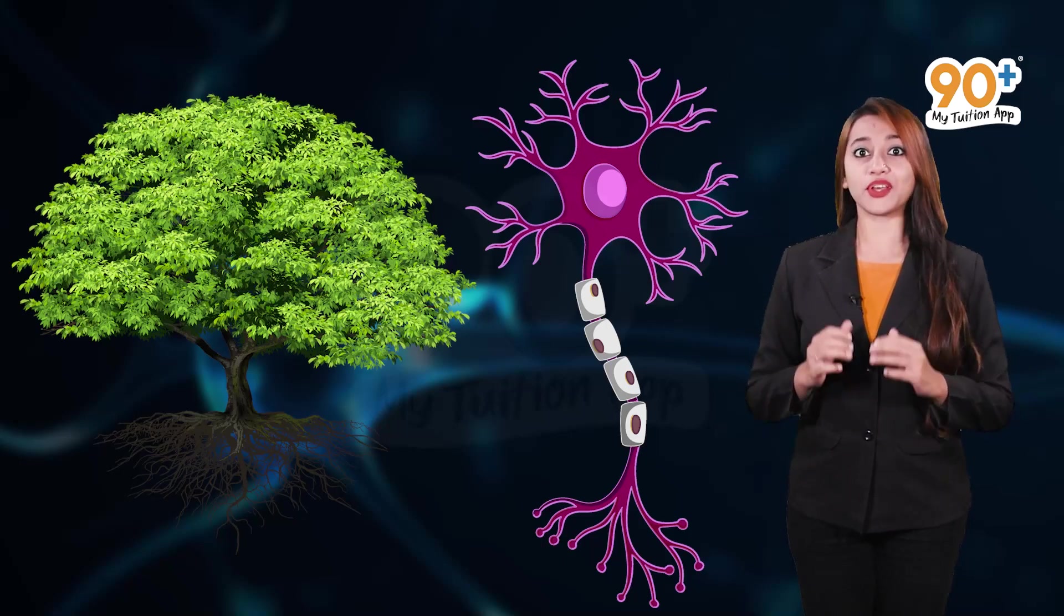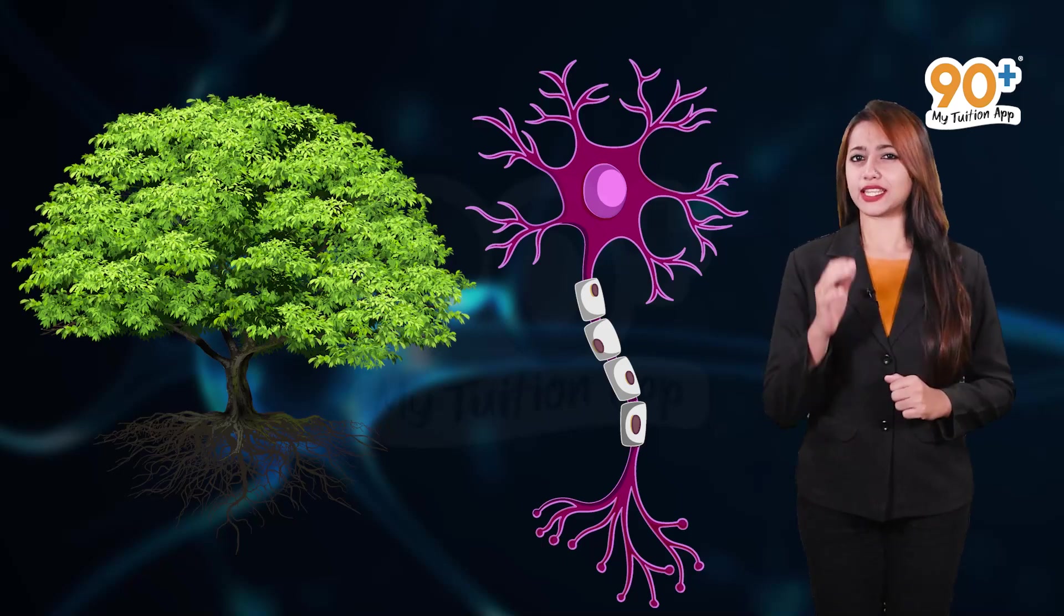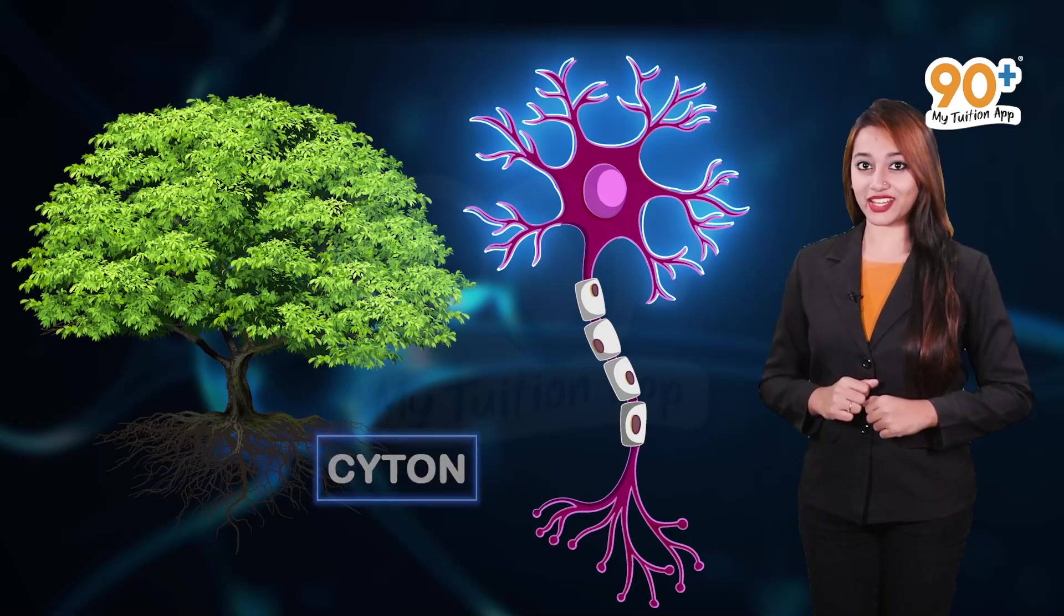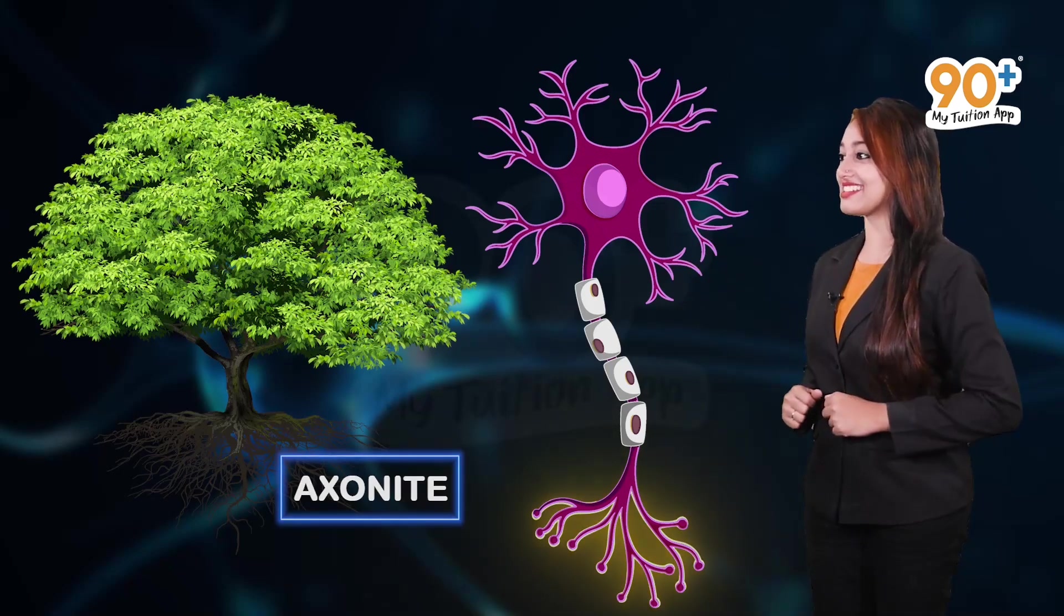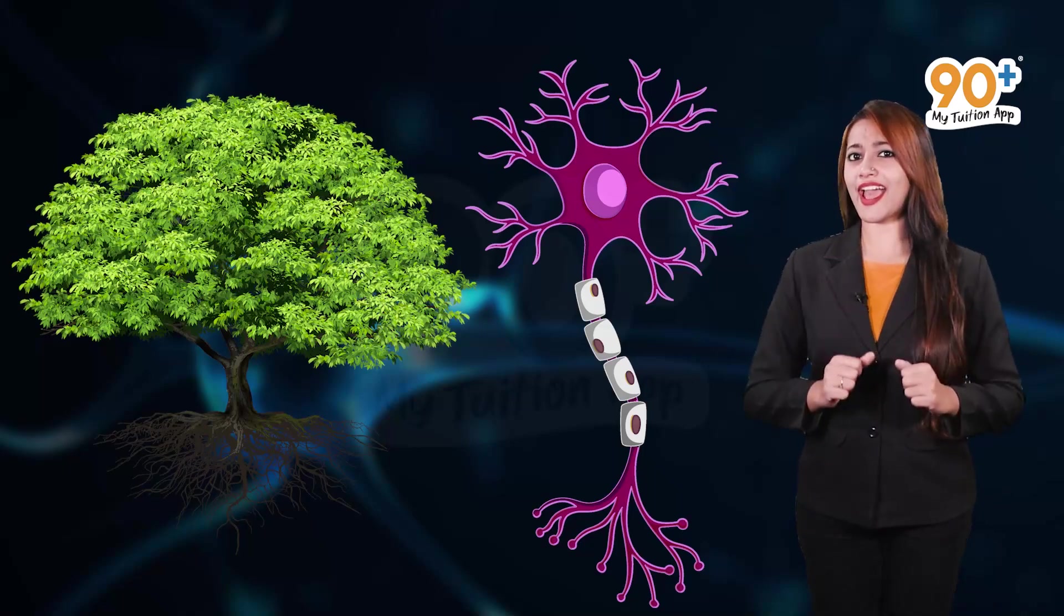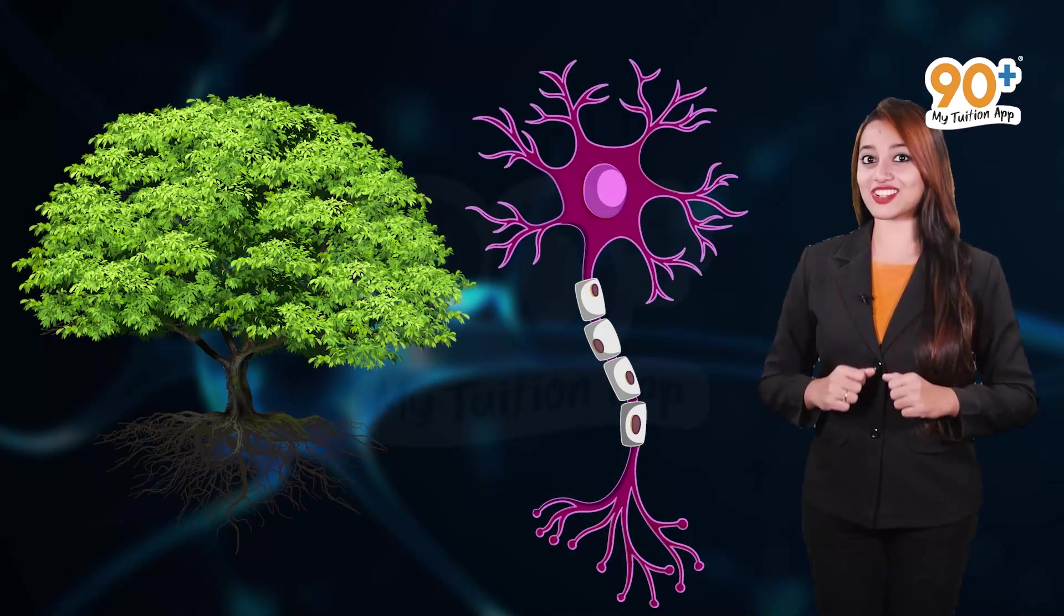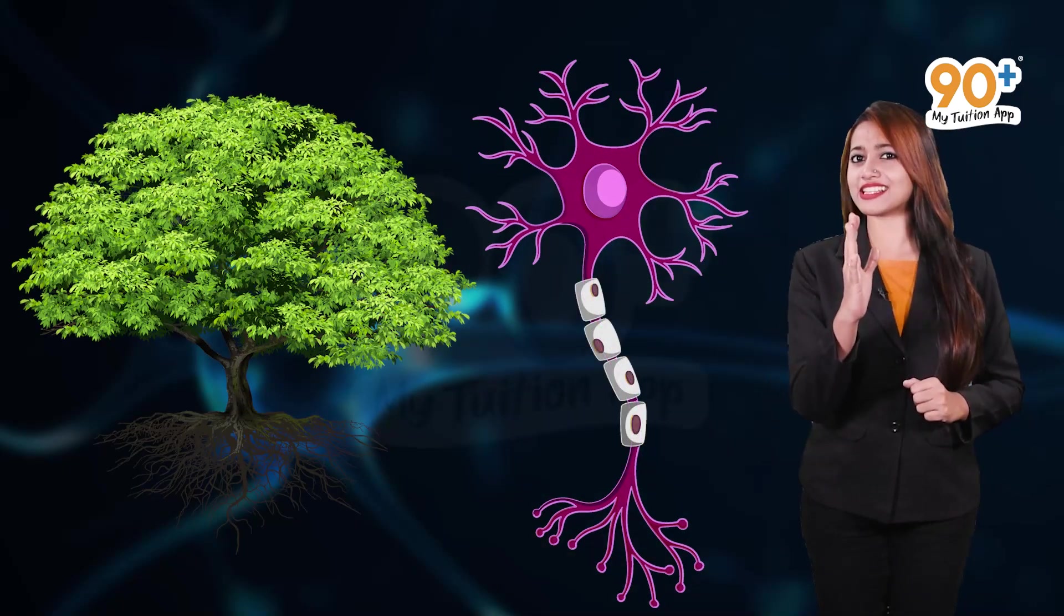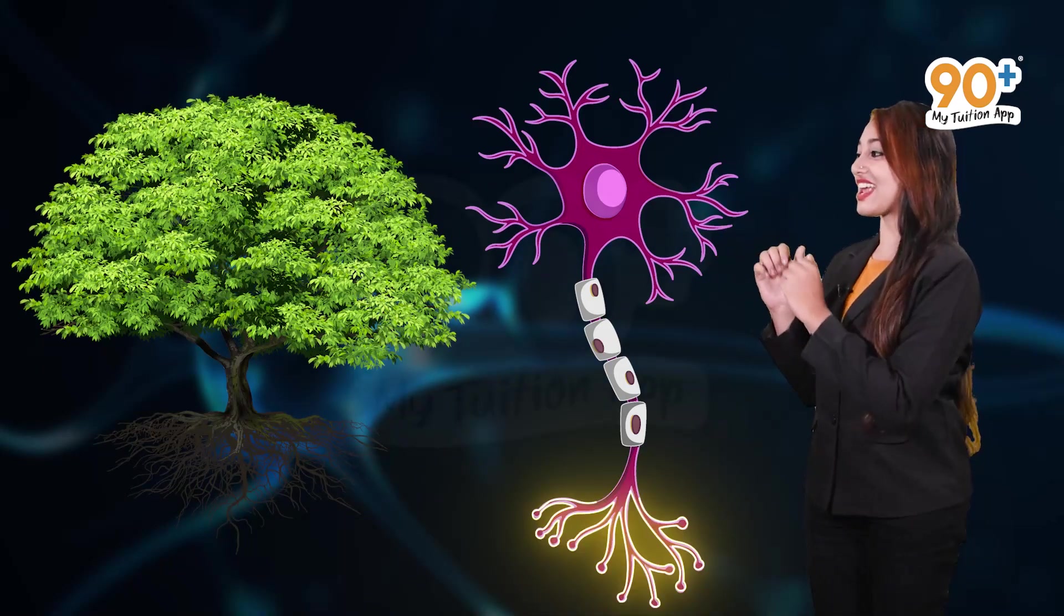The neuron also have three parts and what are they? The three parts of the neuron are the cytone or the cell body, the axon and finally the axonite. As you can see, the tree have crown, the neuron have the cytone. As the trunk in the tree, the neuron have the axon and finally as the roots of the tree, the neuron is having axonites.